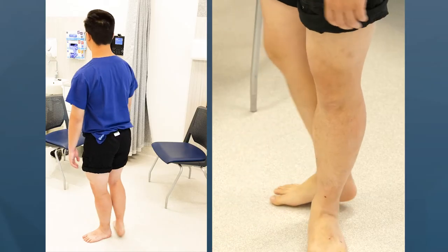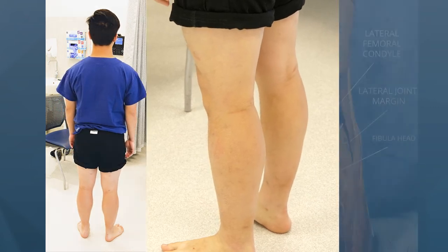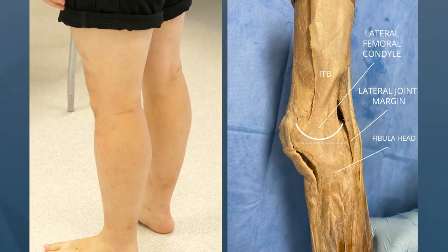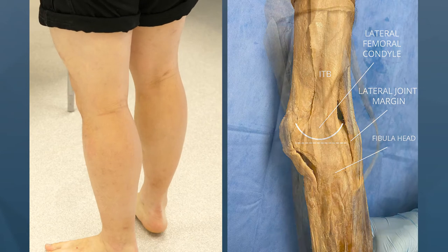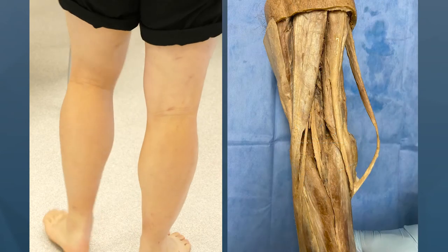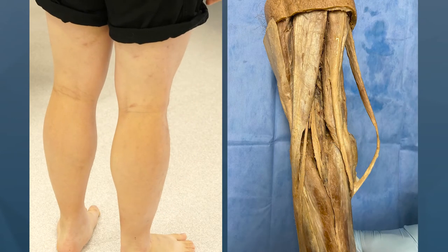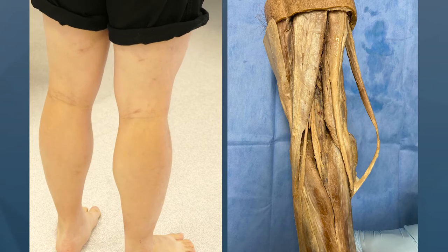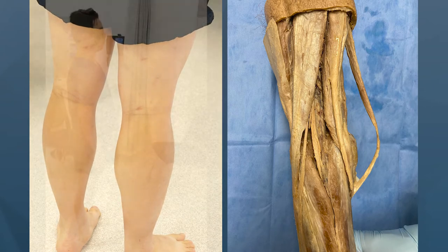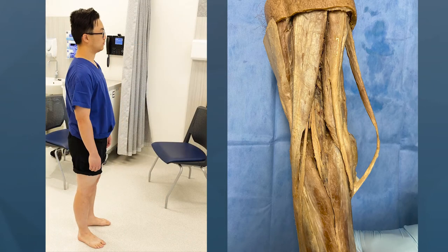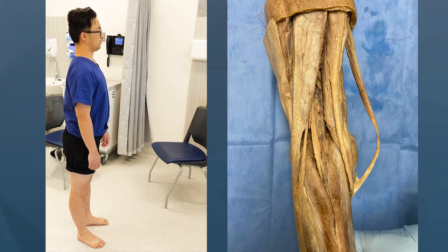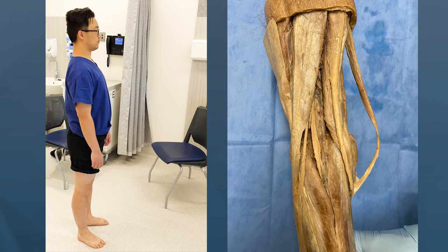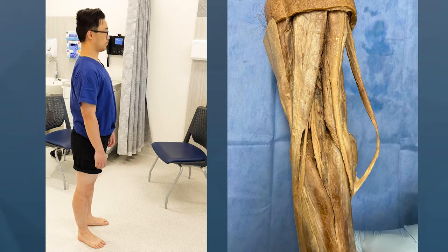From the sides and back, comment on gastrocnemius bulk, any popliteal swellings, the presence or absence of sagittal plane deformity, including any fixed flexion or genu recurvatum. From the side, ask the patient to push their knees back to determine if the fixed flexion is present or posture related.